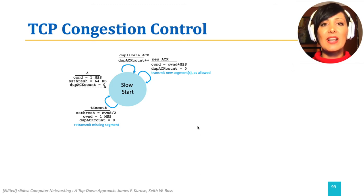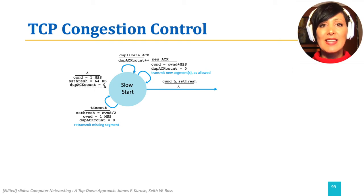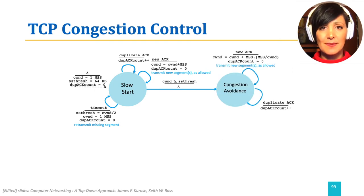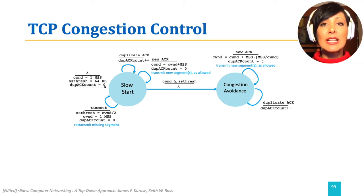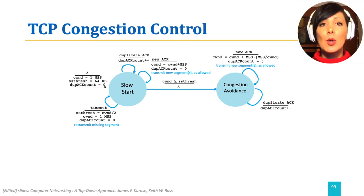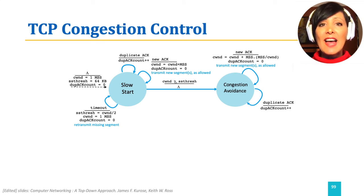When the congestion window reaches the slow start threshold value, the state will change to congestion avoidance. In this state, for each new ACK, the window size will increase only mildly. To reach an increase of 1 MSS per RTT, we can divide MSS by window size and only add that portion of MSS for each ACK.